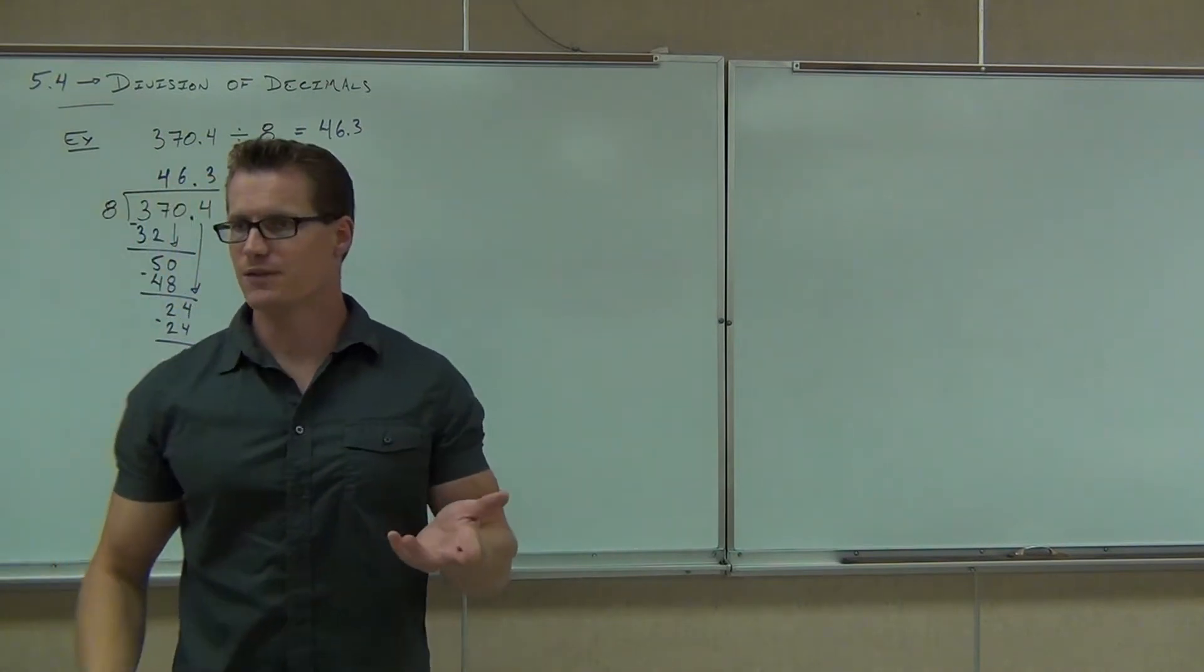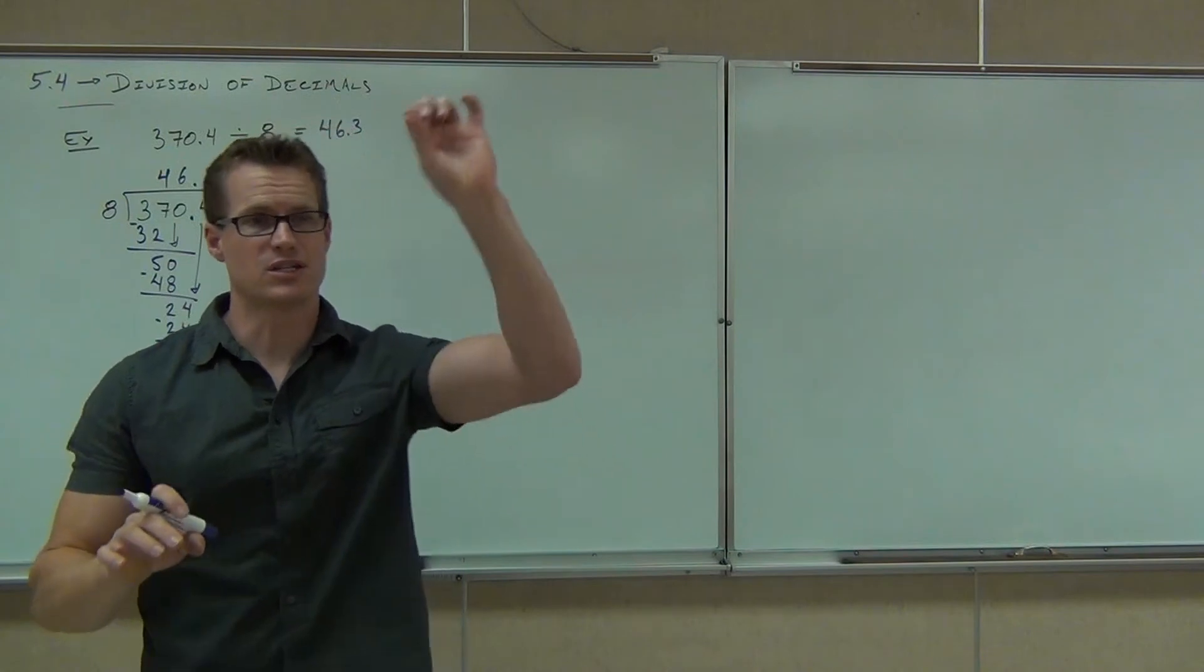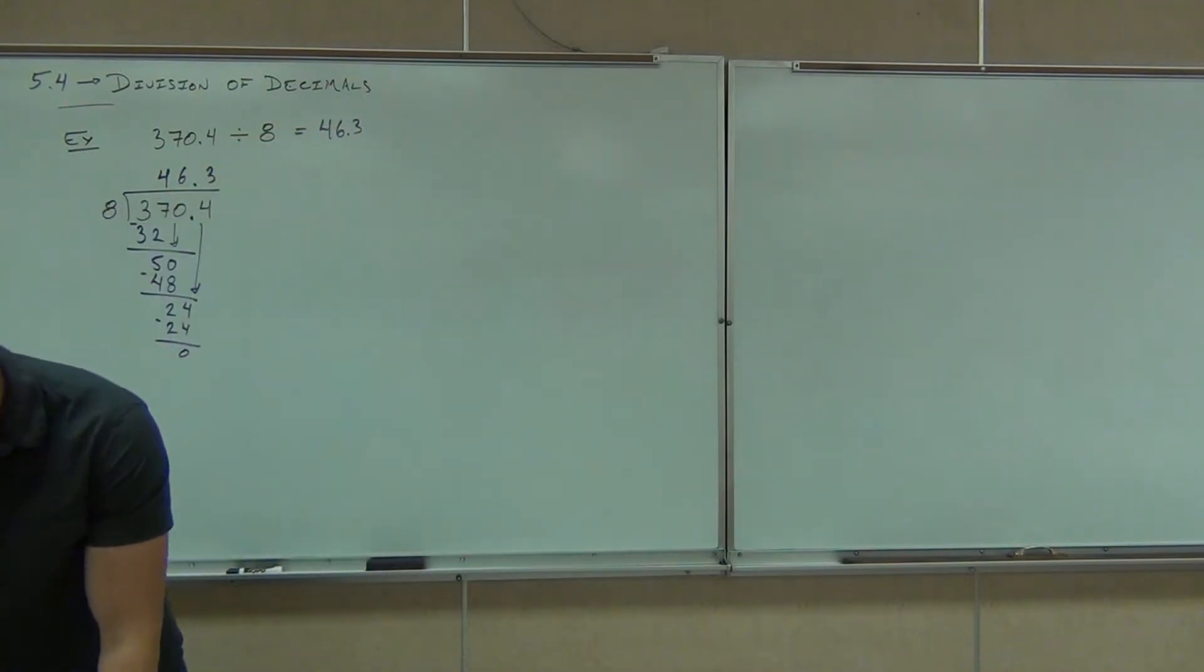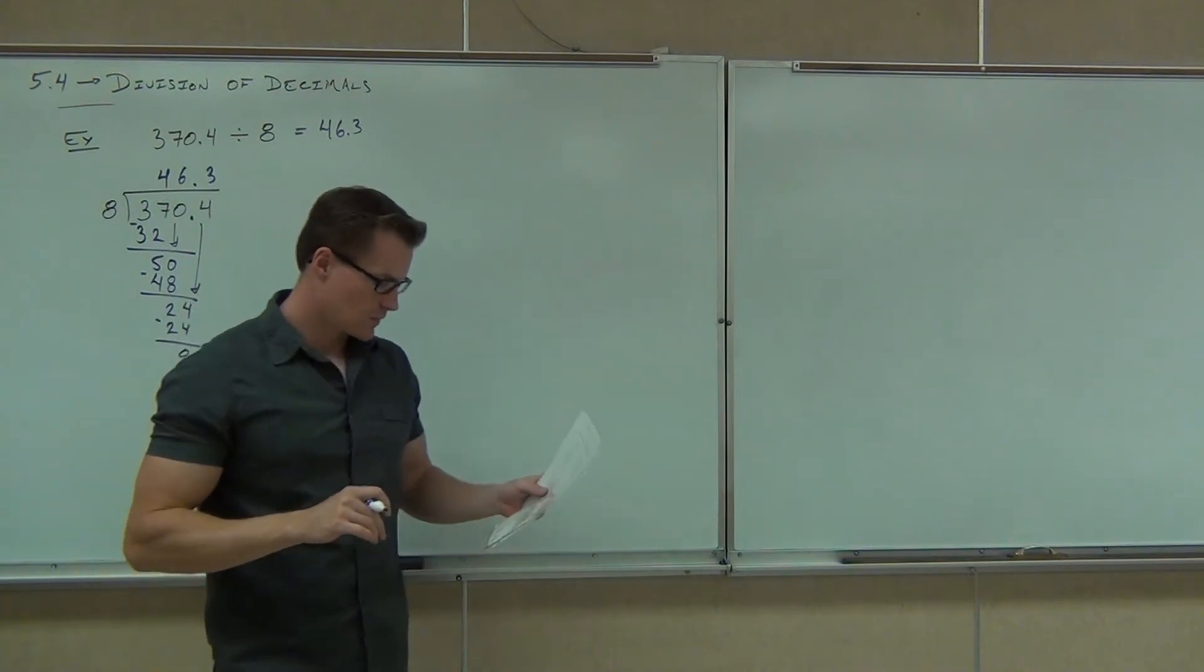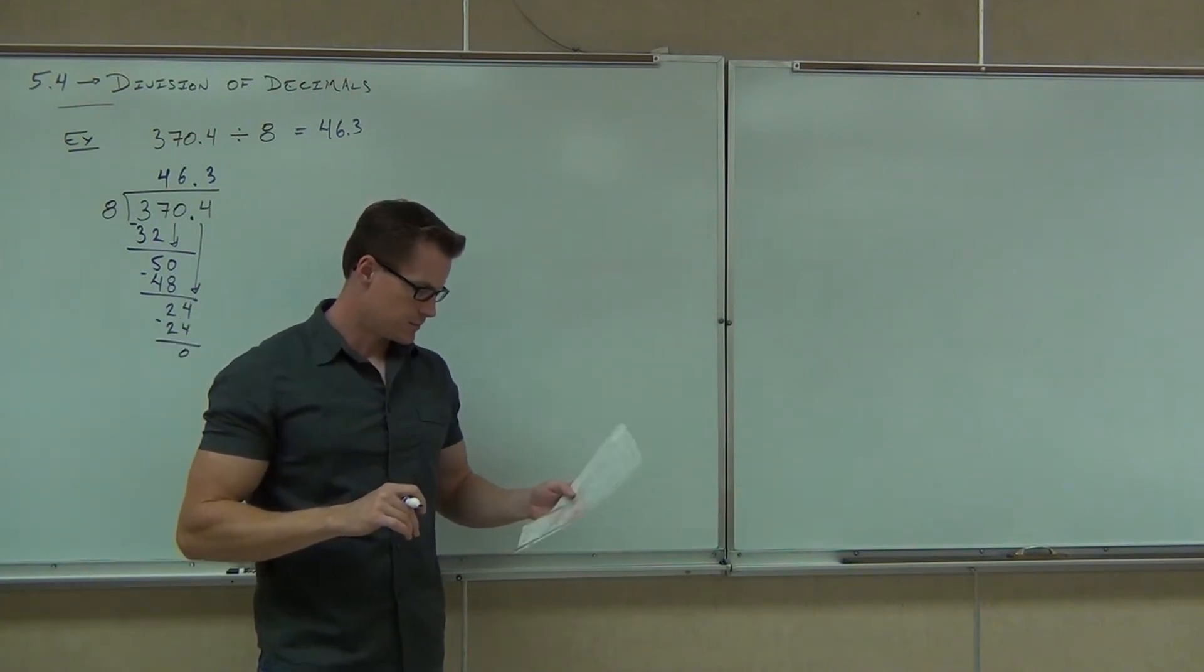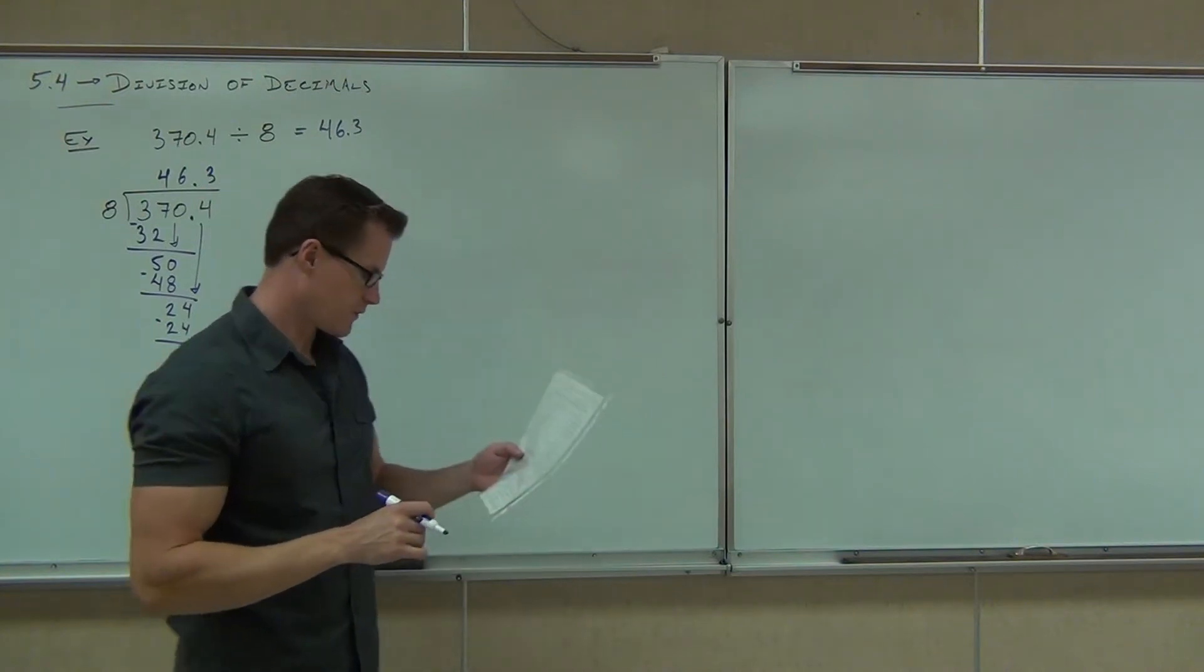Our answer is 46.3. So dividing decimals works just the same thing as whole numbers as long as you remember that that decimal place needs to be carried up into the quotient. How about we do a couple more together?